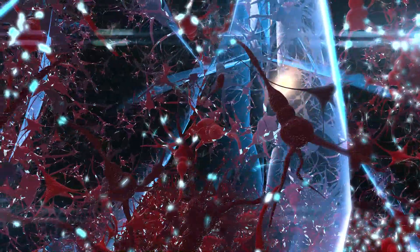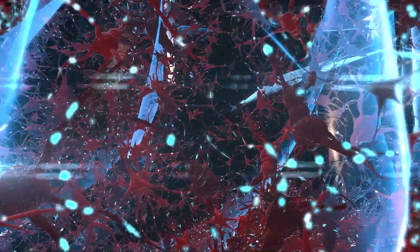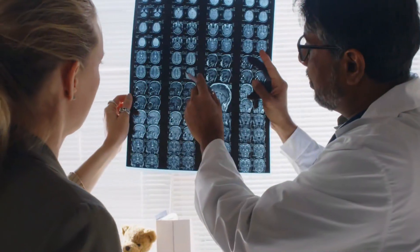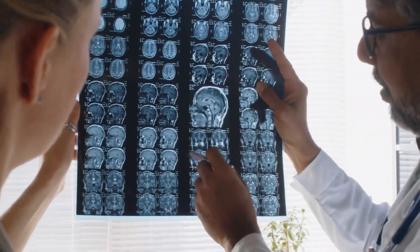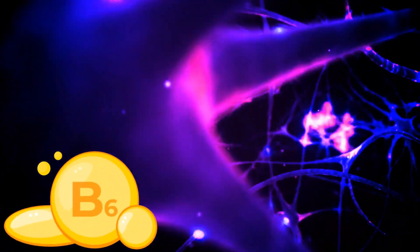Its active form, pyridoxal 5-phosphate, helps create serotonin and dopamine, the feel-good chemicals your brain craves. This means B6 doesn't just keep your nerves firing—it keeps your mood in check too.